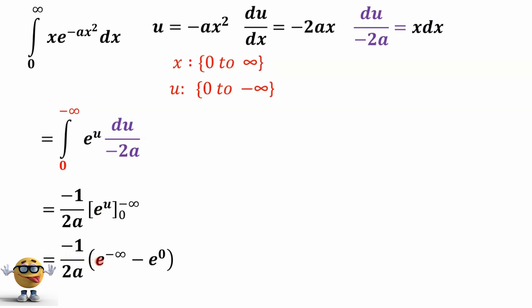Negative 1 over 2a times e to the power of negative infinity minus e to the 0. Now, mathematicians don't like infinity here. They like this as a limit as some variable goes to infinity, and this is the variable here. But if you're all right with it, I'll just put this as infinity.